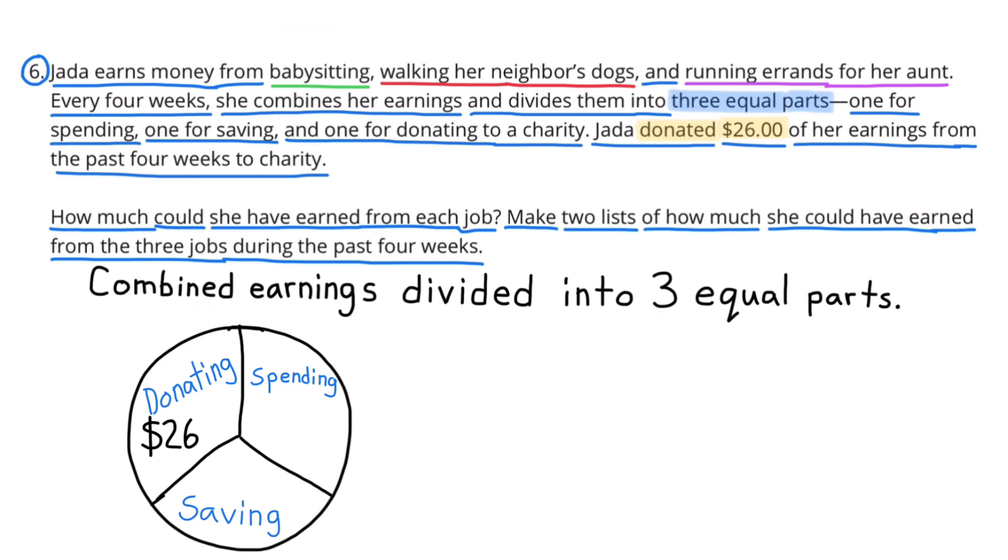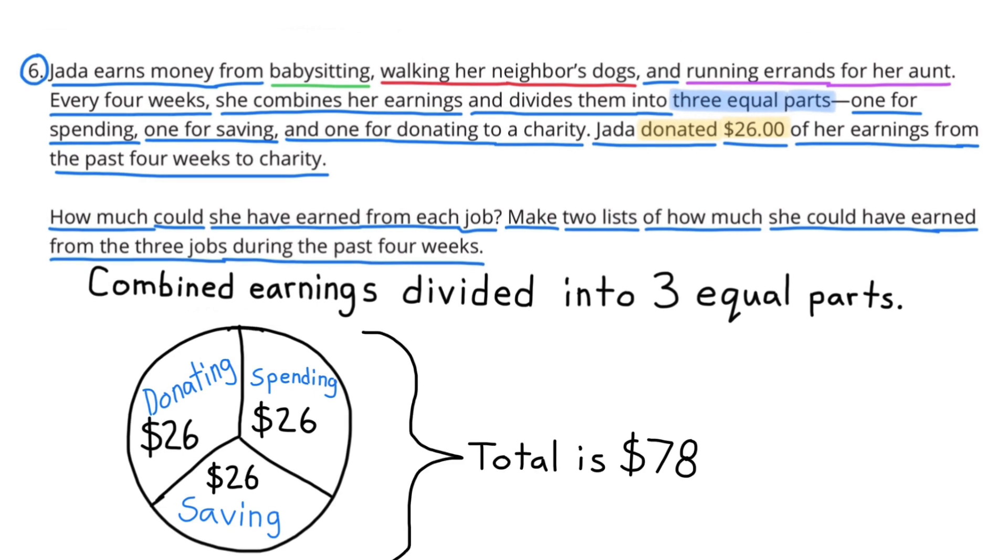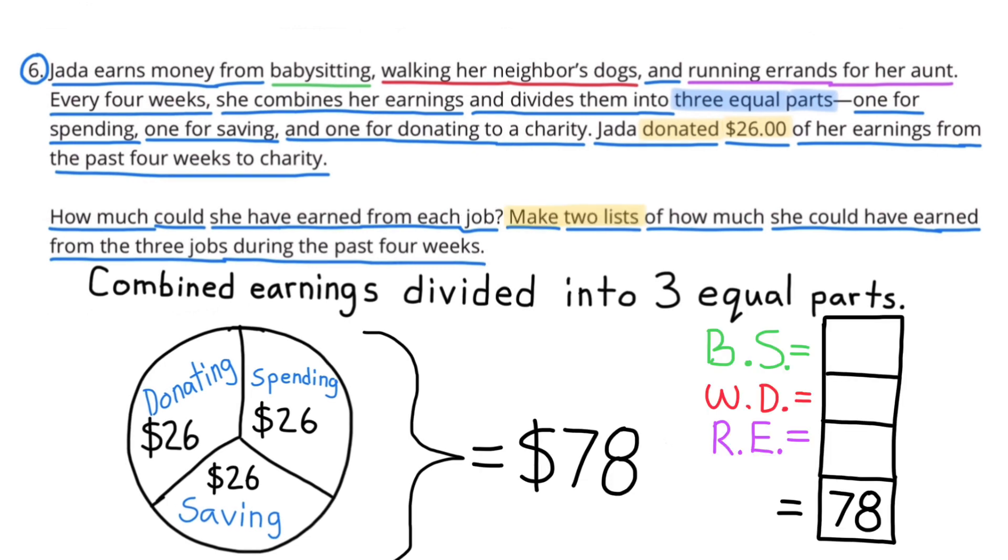The information tells us that Jada donated $26, so in the donating section we need to list $26. Since all three parts are equal, then spending also has $26 and saving has $26. Now we know that the combined earnings is $78.